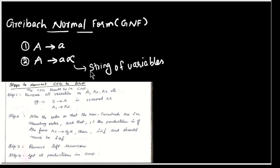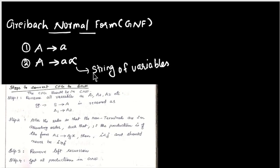Today we are going to see Greibach Normal Form. In the last class we saw Chomsky Normal Form (CNF), and this is the second type of normal form. For any CFG to be in GNF, the production rules must be of two forms: A gives a single terminal 'a', or A gives 'a' followed by alpha, where alpha is a string of variables. So the right-hand side must start with a terminal, followed by any number of variables.